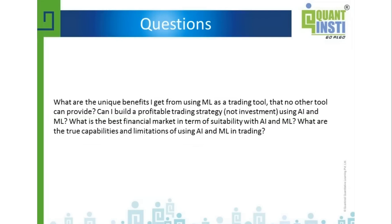There is also the notion of meta labeling in trading, which has been popularized recently by Dr. Lopez de Prado. The idea of meta labeling is that even if you have a very clear intuition about what to trade and what the inefficiency is, you can still use machine learning to improve the basic strategy. By including other features, you try to predict when your simple trading strategy is likely to be wrong and avoid those trades. This applies a second layer of correction to your basic trading strategy.